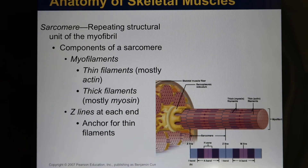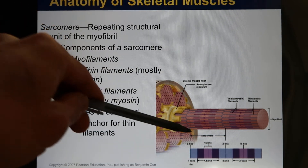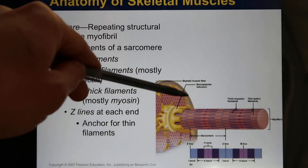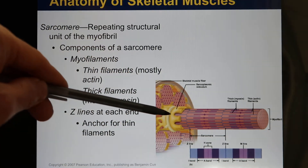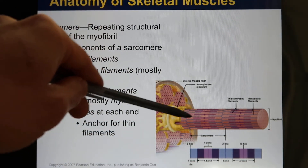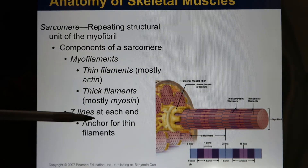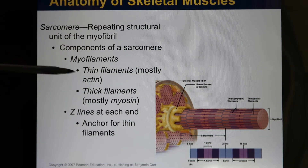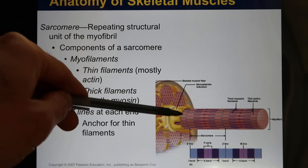In skeletal muscle, you have those repetitive structures called the sarcomere. There are many sarcomeres in skeletal muscle. Each sarcomere is made of thick filaments and thin filaments — these are called myofilaments. The thick filament and the thin filament are pretty well organized.